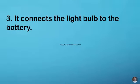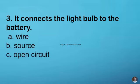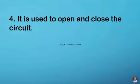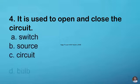Number three. It connects the light bulb to the battery. A. Wire B. Source C. Open circuit D. Bulb. Number four. It is used to open and close the circuit. A. Switch B. Source C. Circuit D. Bulb.